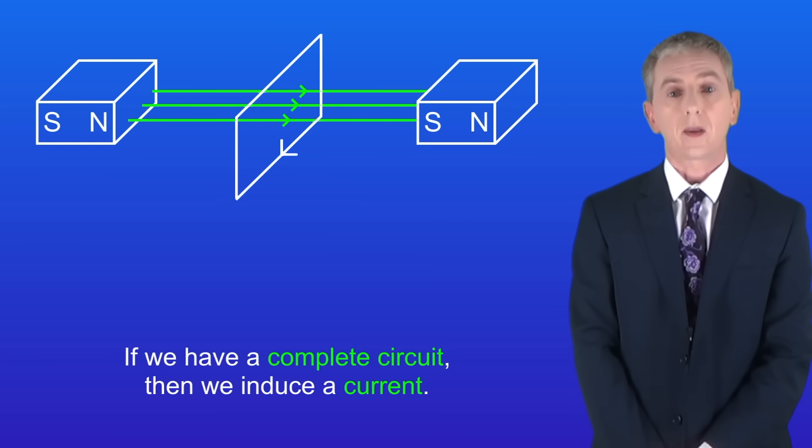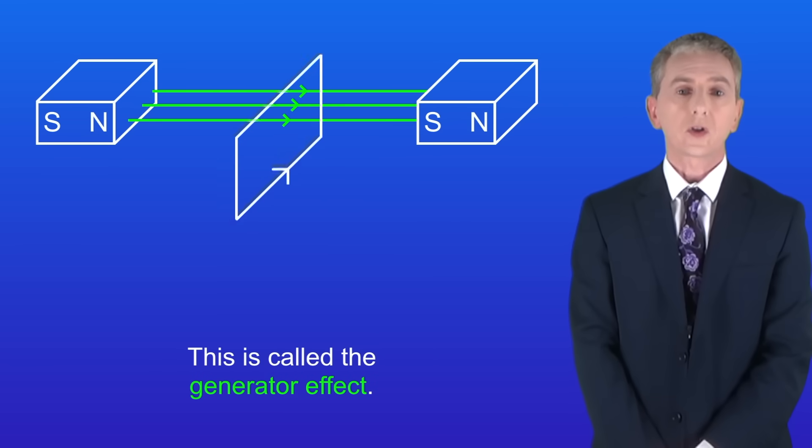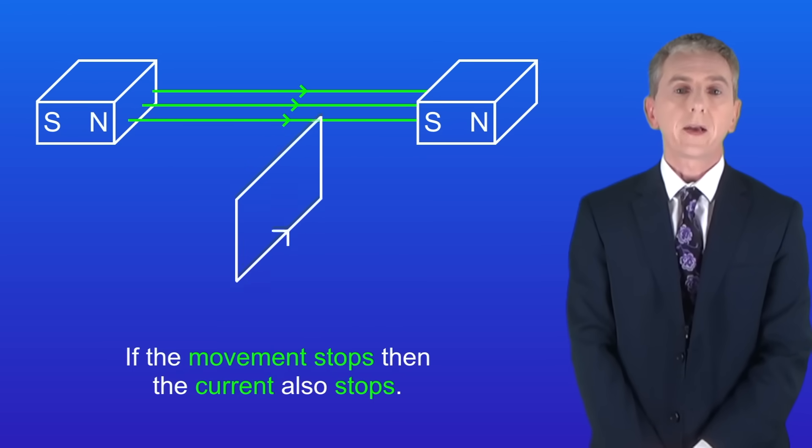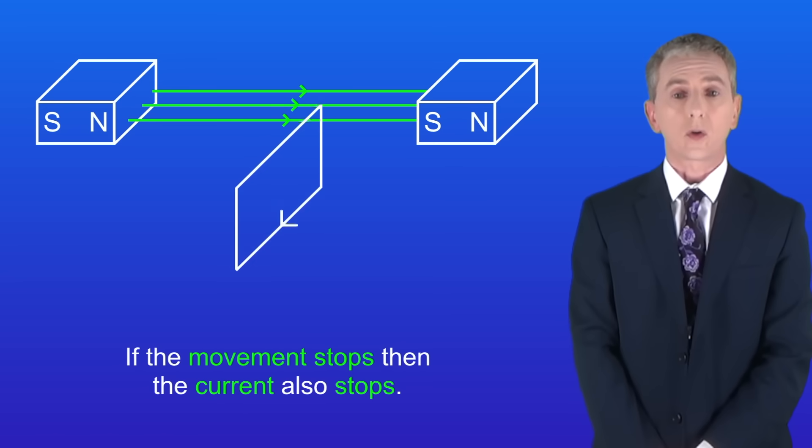Now if we have a complete circuit, then we induce a current. This is called the generator effect. Remember that the direction of the current switches when the direction of movement switches, and if the movement stops then the current also stops.